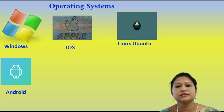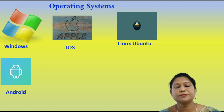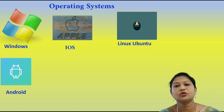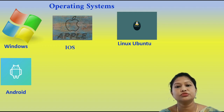Now we look at operating system logos. First we have the Windows logo, then iOS for iPhone and iPad. Next is Linux and Ubuntu with their logos, and finally the Android mobile operating system logo.